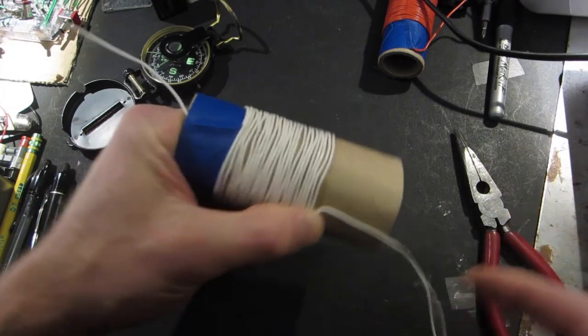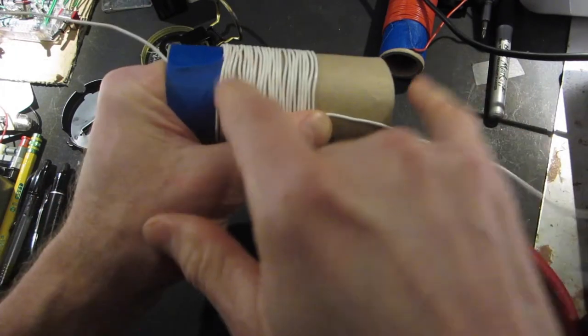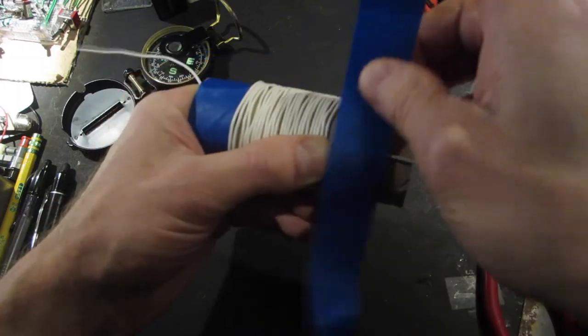Well I managed to use up my whole spool of bell wire, so I'm pretty happy about that. When you've wound at least half of the length of the tube, tape it off.